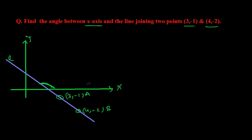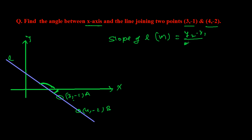Before that, let me show you something. The slope of line L, M, is actually the difference of y-coordinates over the difference of x-coordinates. Since we have two points, we can write M = (y2 - y1) / (x2 - x1). This is the slope of this line L.